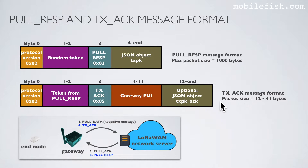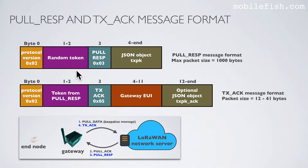This is the transmission acknowledge packet message format. The packet size is between 12 and 41 bytes. Byte 0 contains protocol version 2. Byte 1 and 2 contain the token from pull response — both tokens are the same. Byte 3 contains an identifier; value 5 means transmission acknowledge. Byte 4 to 11 contains the gateway EUI, and starting from byte 12 it contains an optional JSON object called transmit packet acknowledge.